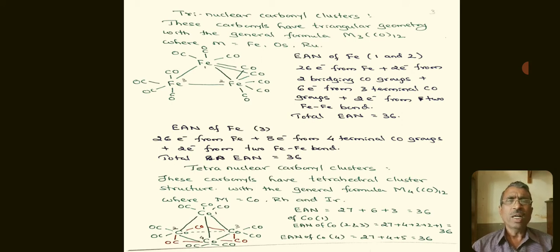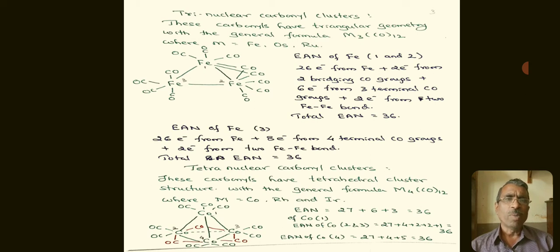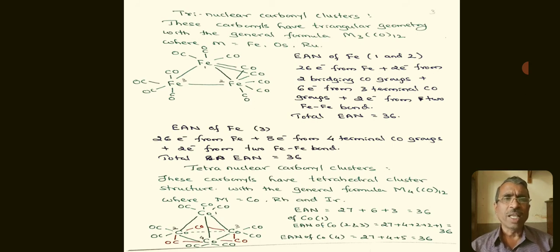Similarly, for the third iron atom in this trinuclear carbonyl cluster: it contains 26 electrons from iron, and it is linked to four terminal carbonyl groups, each contributing 2 electrons, giving 8 electrons total. This iron atom is connected to the two other iron atoms, giving 2 electrons from two Fe-Fe bonds. So 26 + 8 + 2 = 36, the EAN of the third iron atom in the trinuclear carbonyl cluster.